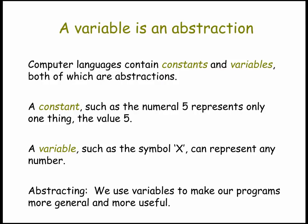We're going to look at a couple of examples from software. In programming languages, both variables and constants are examples of abstractions. A constant is a symbol that represents a single thing — for example, the numeral 5 represents only the value 5; it can't represent the value 10. By contrast, a variable like the symbol x can represent any number — it can represent 5, 10, 14, or minus 10. We're going to use variables to make our programs more general.